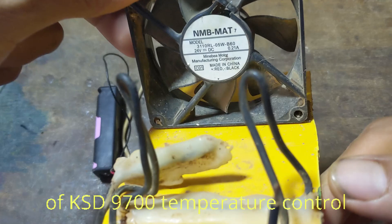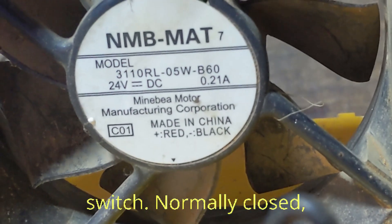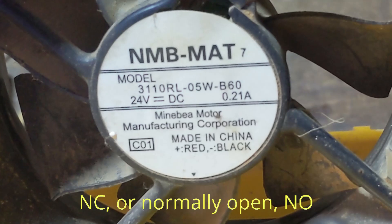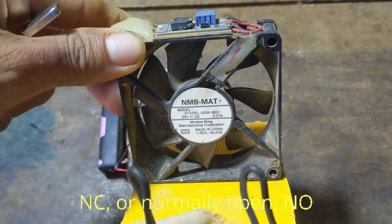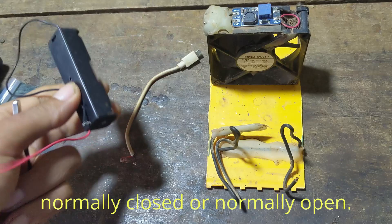Features of KSD 9700 temperature control switch: Normally closed (NC) or normally open (NO). Depending on the model, the switch can be normally closed or normally open.